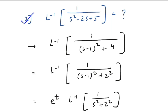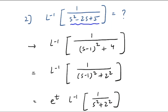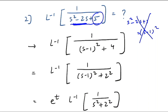Example 2: Laplace inverse of 1/(s²−2s+5). In the first attempt you cannot say the answer directly because the denominator is not in a standard format. Your task is to convert it into a standard format using some manipulation. Looking carefully at the denominator s²−2s+5: if it were s²−2s+1 you could write it as (s−1)², but here we have +5.